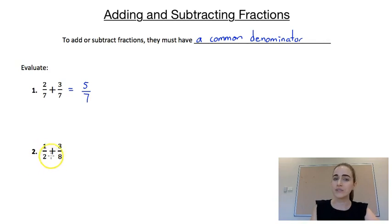Now if we get a question like this one, so we've got 1/2 plus 3/8. Because they don't have a common denominator, we're going to have to manipulate them so that they do. So the first thing we need to do is find the lowest common multiple of 2 and 8.